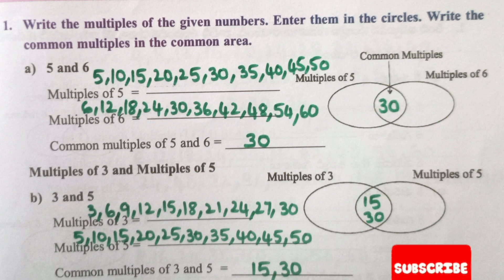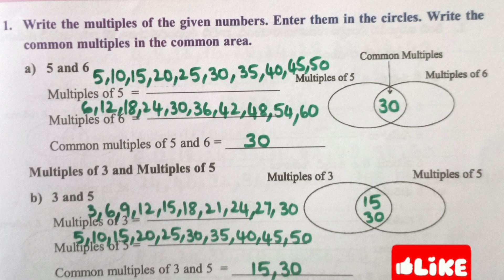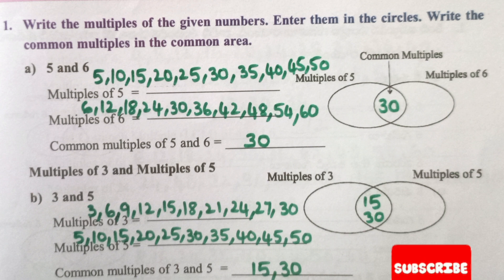Multiples of 6: 6, 12, 18, 24, 30, 36, 42, 48, 54, 60. Common multiples of 5 and 6 is 30.